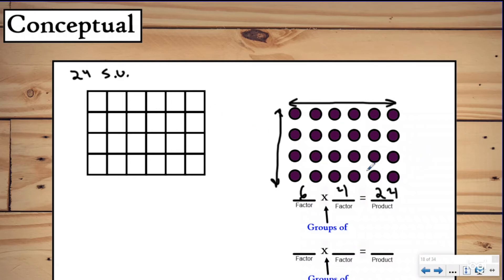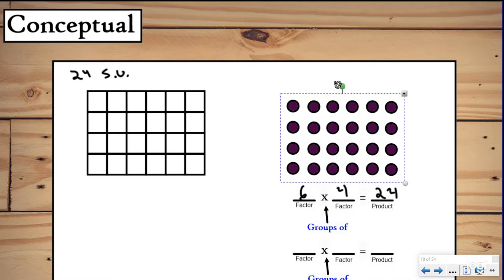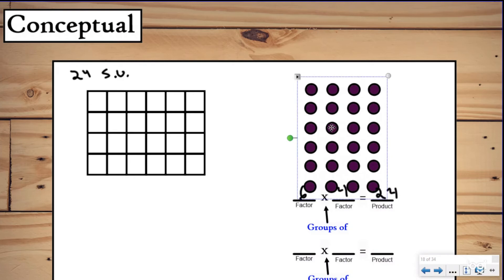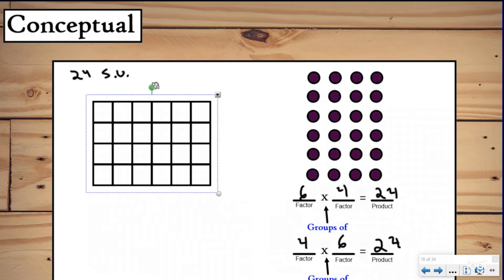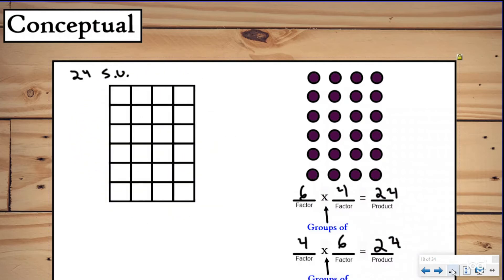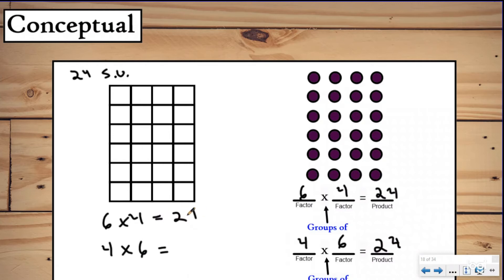Instead of counting one by one we can start to use our multiplication knowledge. An important part about this array is that if you turn it, you can write another multiplication equation: now you can say four groups of six, but turning the array doesn't change the product — it's still 24. You can do the same thing with our area question: if we turn the rectangle, the area doesn't change, just like with the array. To solve for the area we could do six groups of four or four groups of six, depending on how the rectangle is turned — both give 24 square units.